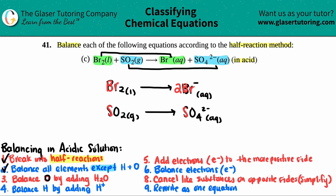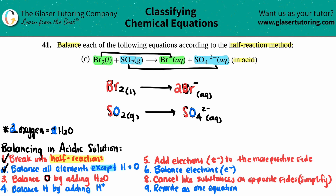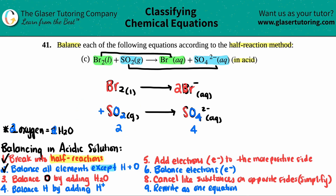Next, we balance oxygen by adding H₂O. If you need one oxygen on a side, add one H₂O; two oxygens, two H₂O's, and so on. The top reaction has no oxygen, so skip it. On the bottom, the left side has two oxygens and the right has four, so I need to add two oxygens — that means two H₂O's on the left.